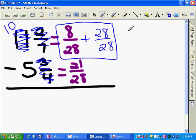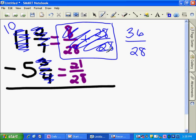So 8 over 28 plus 28 over 28 is 36 over 28. 36 over 28 minus 21 over 28 is 15 over 28, and 10 minus 5 is 5. So this one is 5 and 15 over 28, which cannot be simplified.